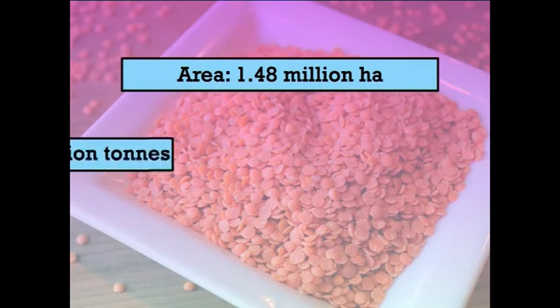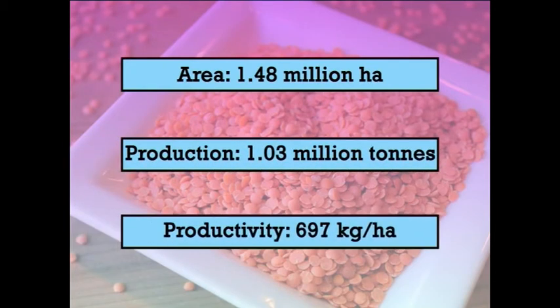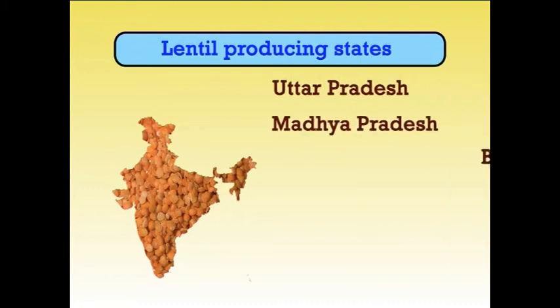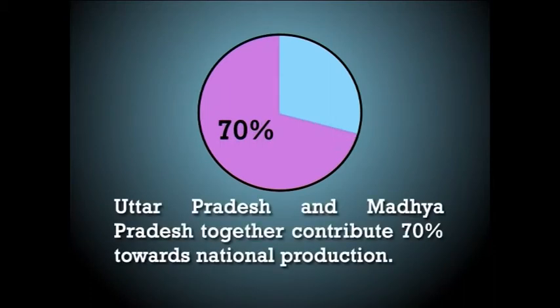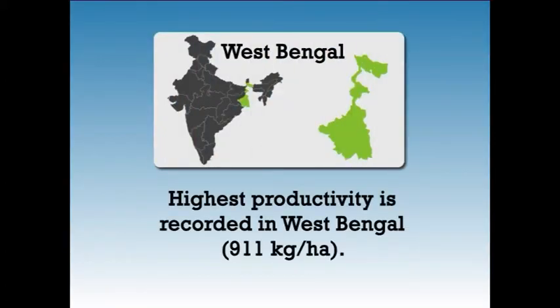In India, lentil is the second most important winter pulse crop. At present, the area, production and productivity is approximately 1.48 million hectares, 1.03 million tonnes and 697 kg per hectare respectively. Lentil production is mostly confined to northern and central India. UP, MP, Bihar, West Bengal, Rajasthan and Jharkhand are major lentil producing states. UP and MP together contribute about 70% towards national production, and the highest productivity is recorded in West Bengal at 911 kg per hectare.